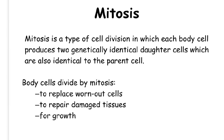Mitosis is the process that makes new cells in our body. It is a type of cell division where one body cell produces two genetically identical daughter cells, which are also identical to the parent cell. By producing two daughter cells from one cell, this increases the total number of cells in a multicellular organism. Body cells divide by mitosis in order to replace worn out cells, repair damaged tissues, and for growth.